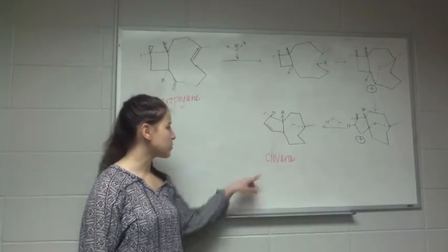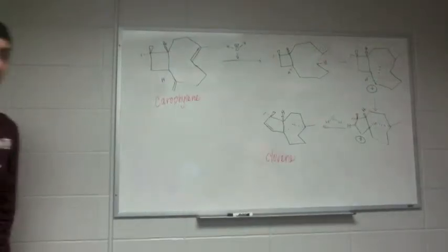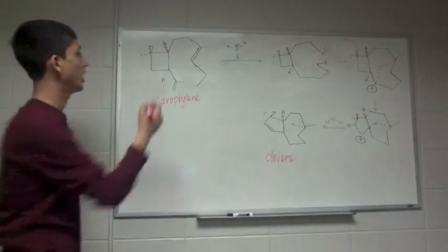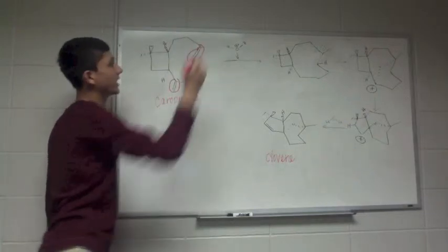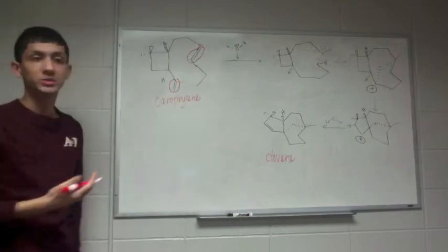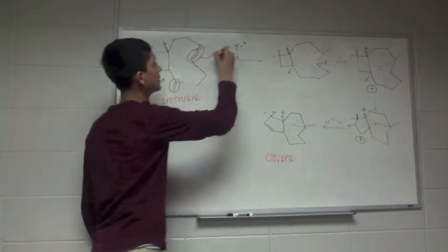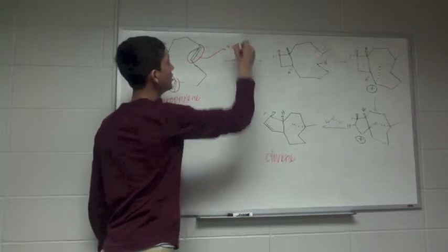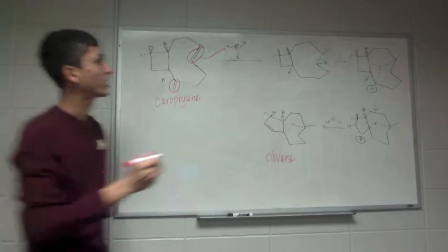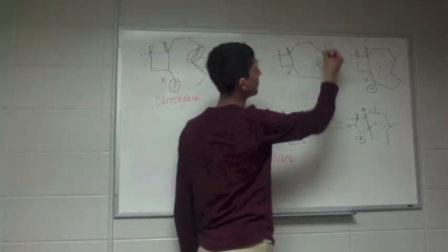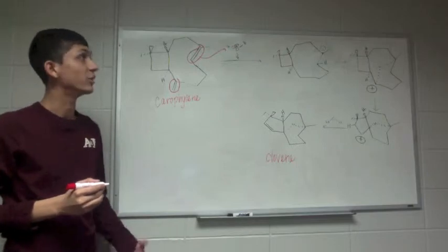Our second product is clovine. All right, so like before, we have our two alkenes again, and this is the alkene that attacks because it forms a more stable carbocation intermediate. So it's going to attack the hydrogen, hydrogen-oxygen bond electrons move to the oxygen, and we get a carbocation right here on this carbon. And it's a tertiary carbocation, which is very, very stable.